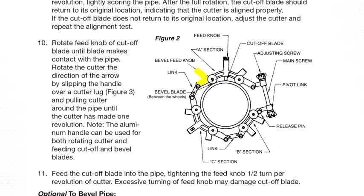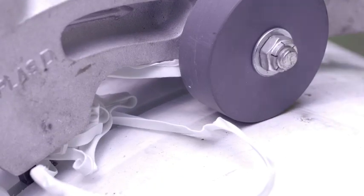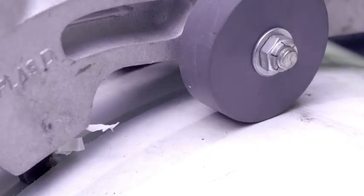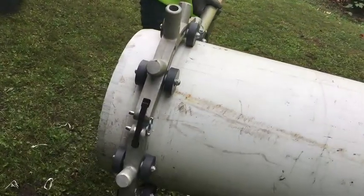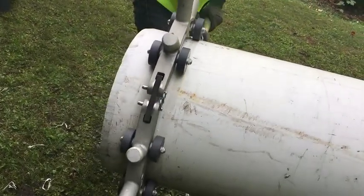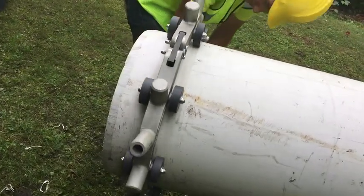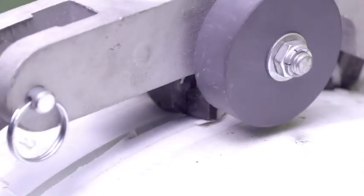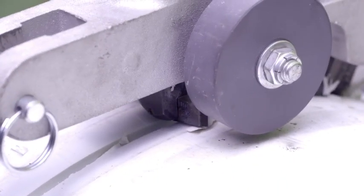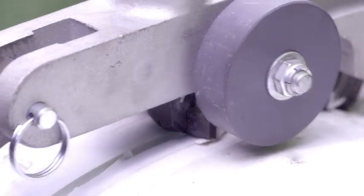Please note: cutting and beveling plastic pipe can be done simultaneously, as long as the cutoff blade does not cut off the pipe before the bevel is complete. Rotate the PLAS cutter around the pipe to complete the cut.